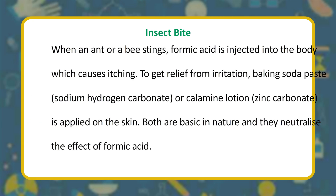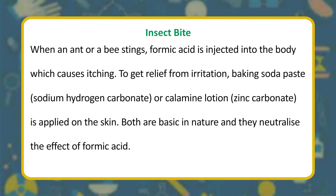Insect bite: when an ant or a bee stings, formic acid is injected into the body, causing itching. To get relief from irritation, baking soda paste (sodium hydrogen carbonate) or calamine lotion (zinc carbonate) is applied on the skin. Both are basic in nature and neutralize the effect of formic acid.